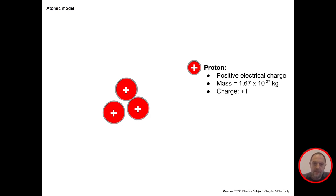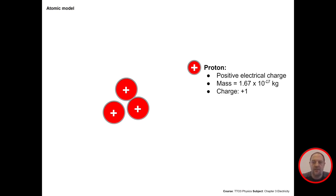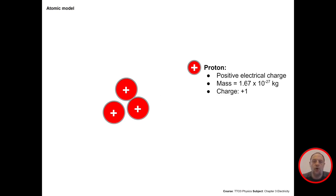First of all, a proton has a positive electrical charge, so the charge is always referred to as plus one. I also show you the mass of a proton — you see it's multiplied by 10 to the power of minus 27, so you should know this is extremely small. All protons are positively charged and that's the main thing to remember. I'm not going to ask you the mass of a proton; this is just to show you how small they actually are.